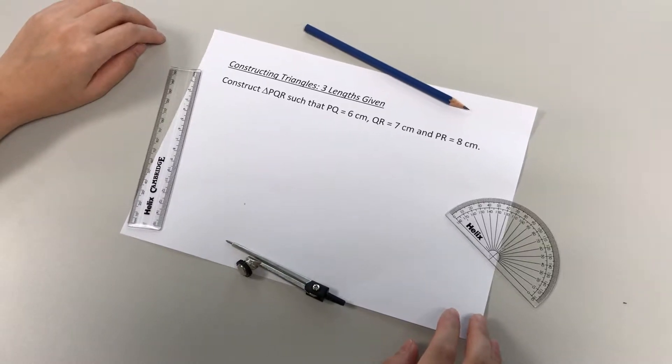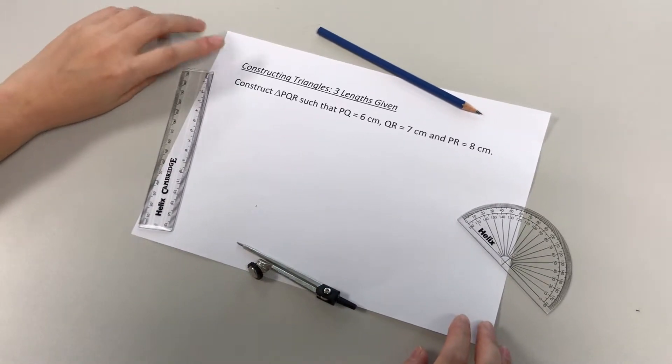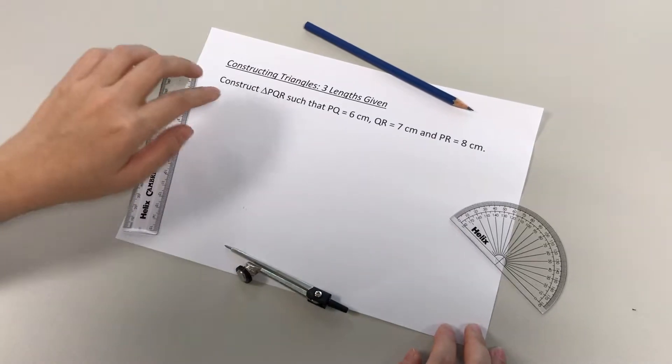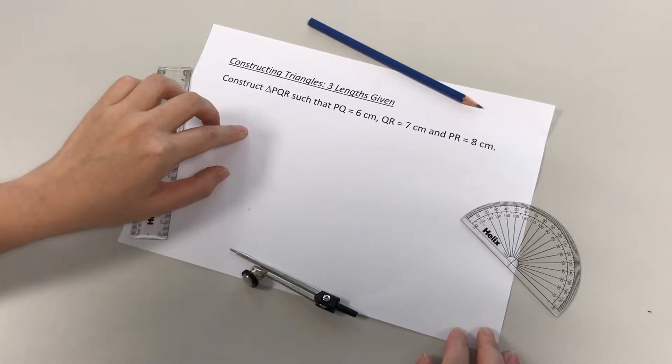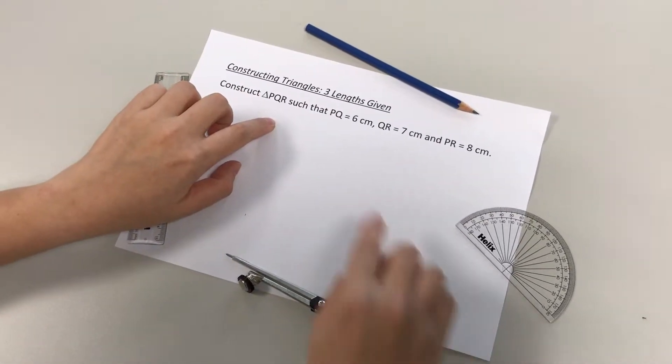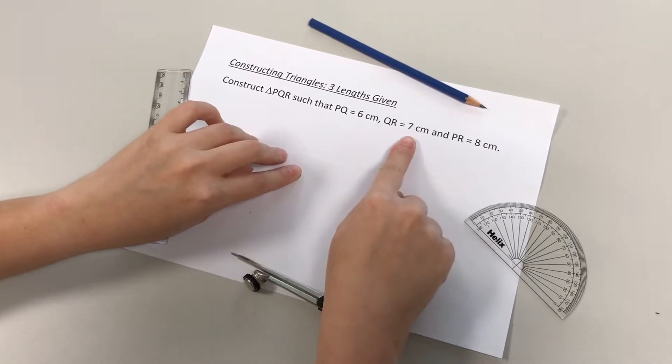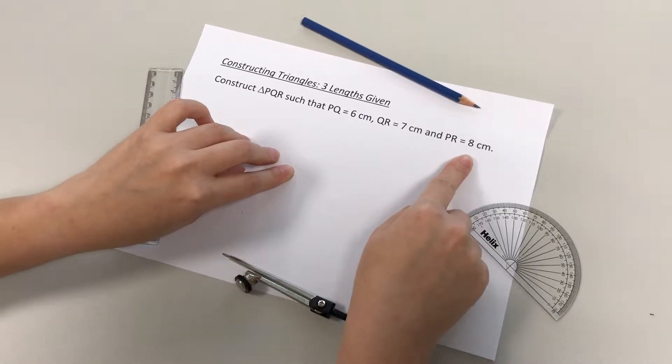All right, so now we are going to look at how we're going to draw a triangle with three lengths given. We see in this question to construct triangle PQR, given PQ is 6cm, QR is 7cm, and PR is 8cm.